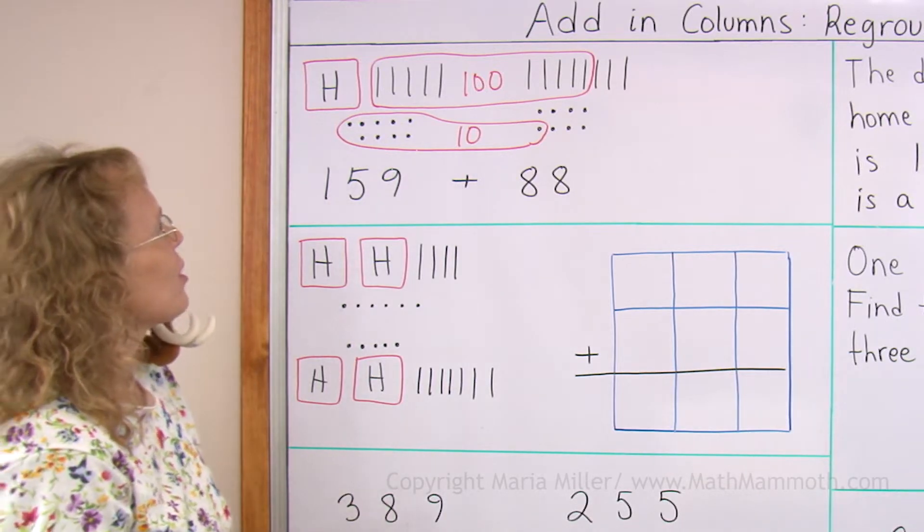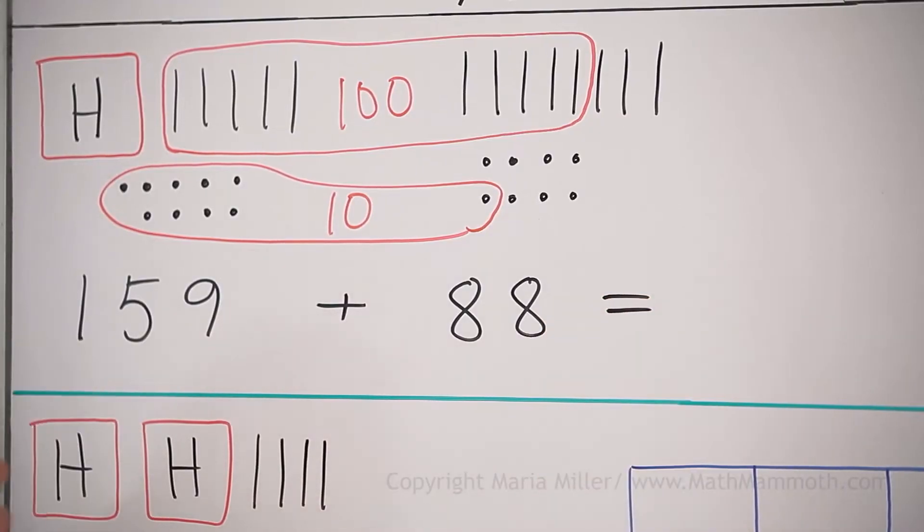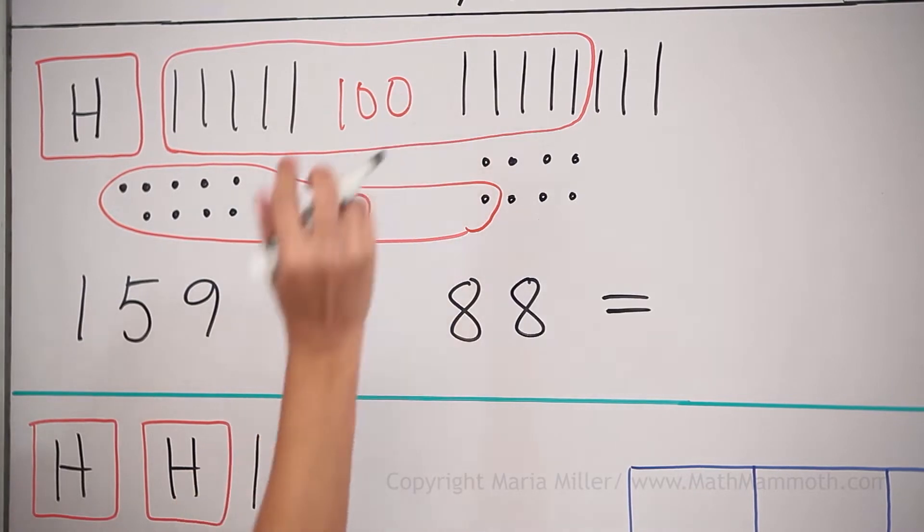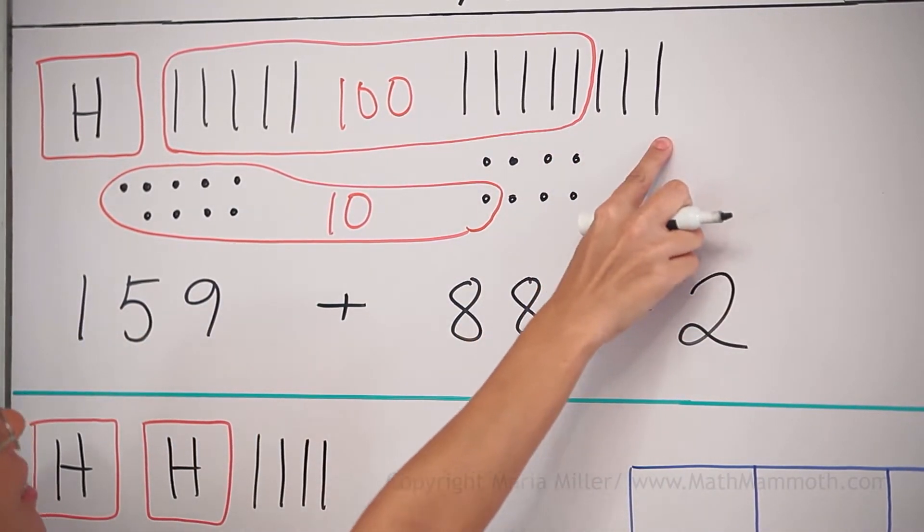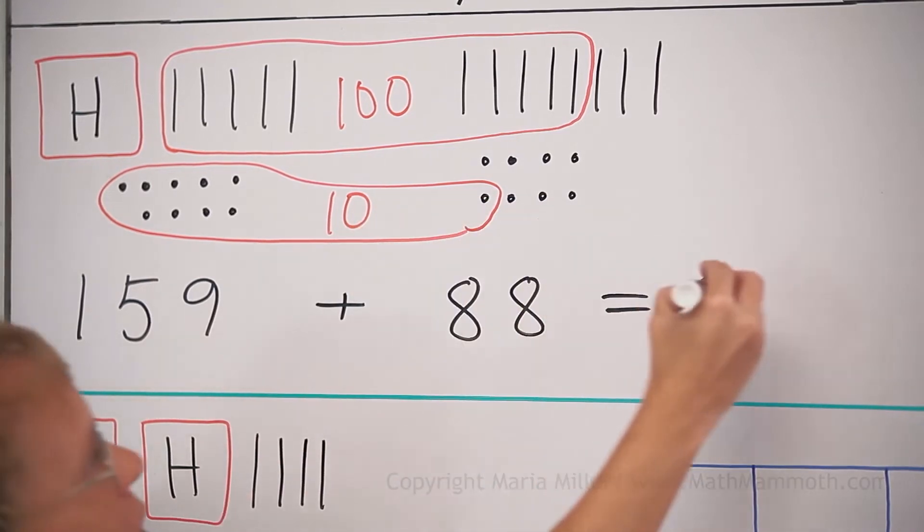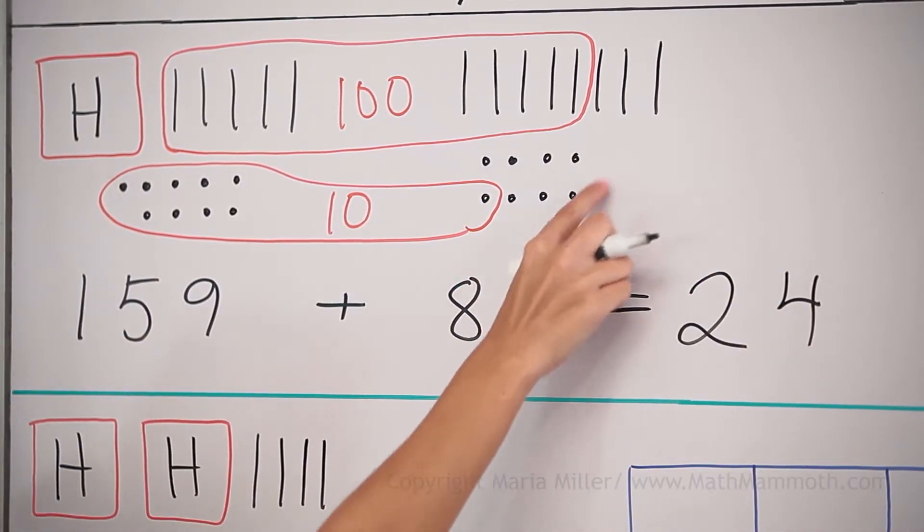So what do we get in total? 100 and 100, so 200. And then three 10s and a new 10, so that's four 10s. And then over here 7.